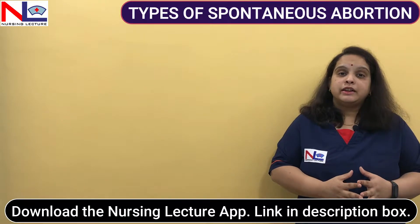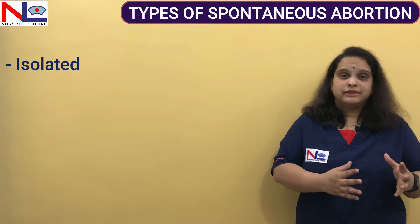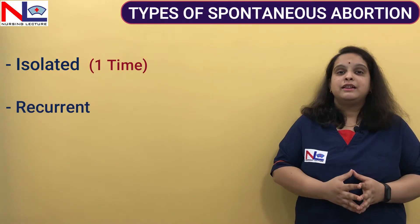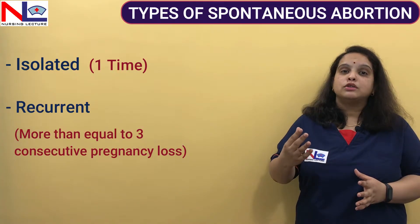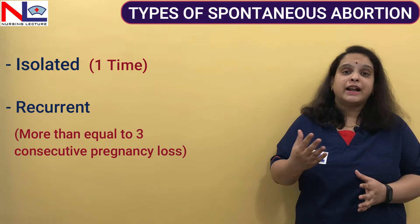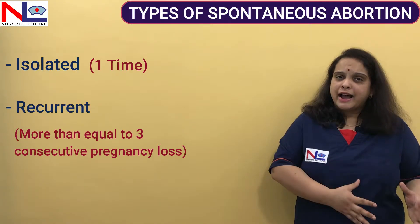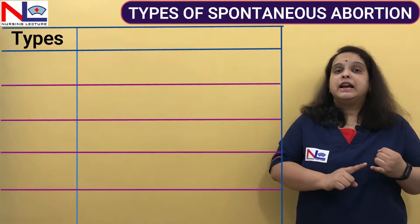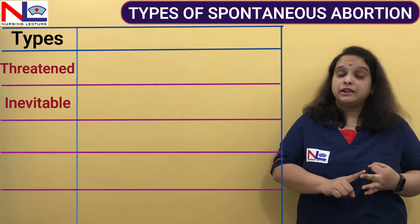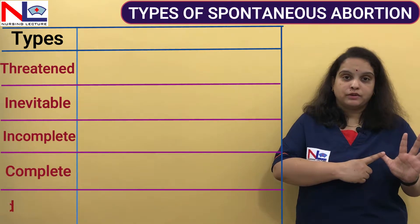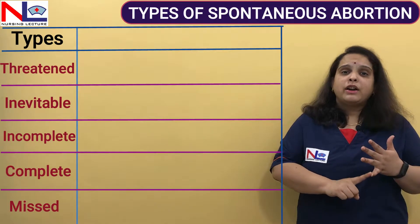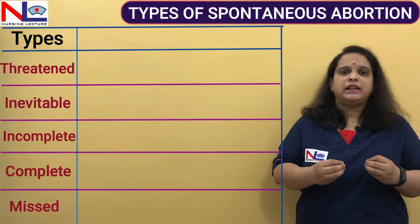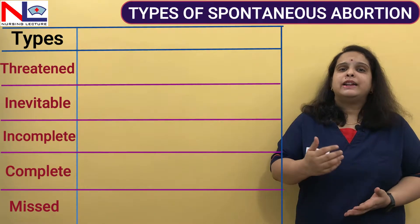Spontaneous abortion is divided into two: isolated, meaning it appears a single time, and recurrent, meaning there is a consecutive loss of three pregnancies — that is habitual abortion. Whether isolated or recurrent, it is again sub-categorized into five: threatened abortion, inevitable abortion, incomplete abortion, complete abortion, and missed abortion.